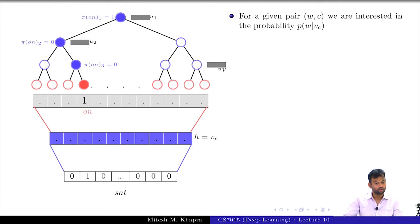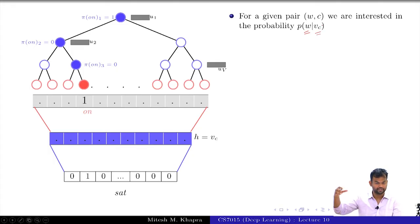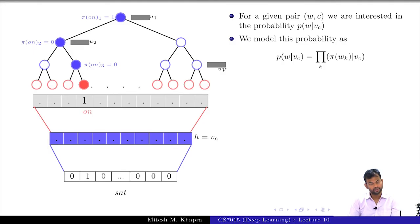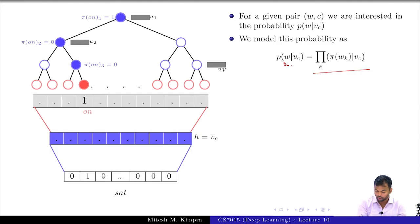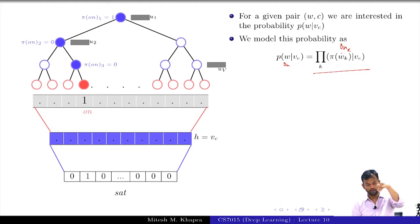For a given pair (w, c) which is the correct pair, we are interested in the probability P(w | VC), where VC is the representation of the context word c. We model this probability as a product over the path. I will get the word ON at the output only if the first element on the path was pi_ON_1, the second was pi_ON_2, up to the kth element on the path was pi_ON_k.